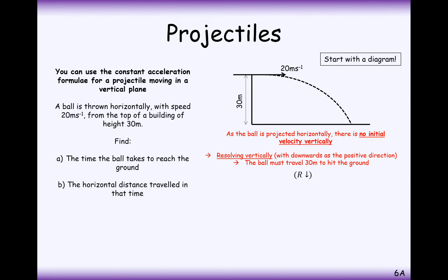What we're going to do first is look at doing SUVAT in the vertical direction to see how long it takes the ball to reach the ground. S, the distance travelled, will be 30. The initial speed vertically is 0 — the initial speed horizontally is 20, but we're only interested in the vertical direction. V we're not interested in, and A we are: it's going to have an acceleration down towards the ground of 9.8. We don't know what the time is.